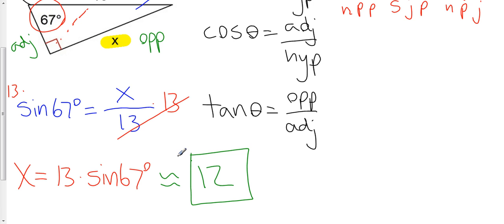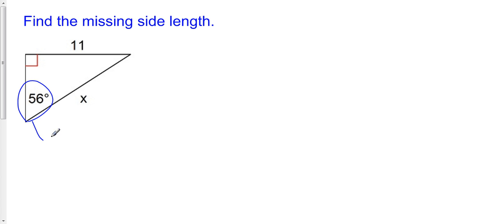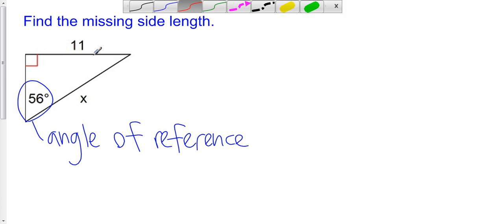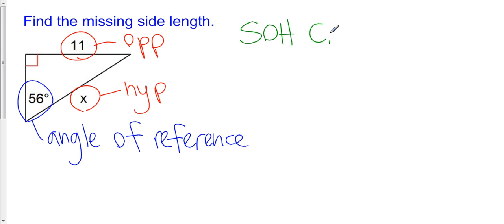Let's do one more example. Find the missing side. Again, I have a right triangle with an angle of reference. With respect to my angle of reference, this is the opposite side and this is the hypotenuse.